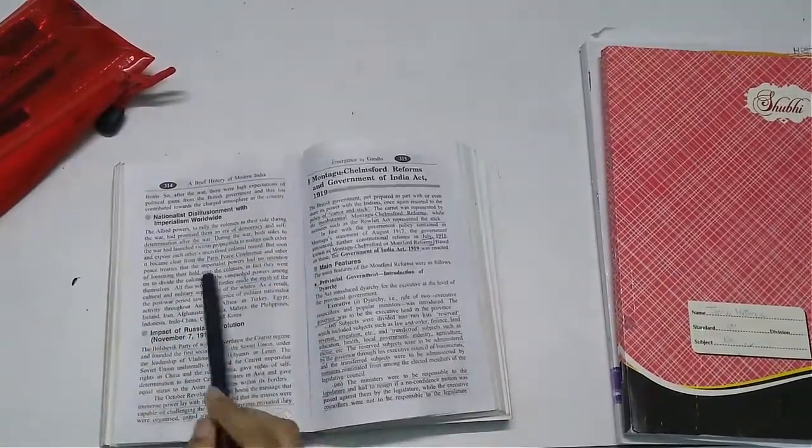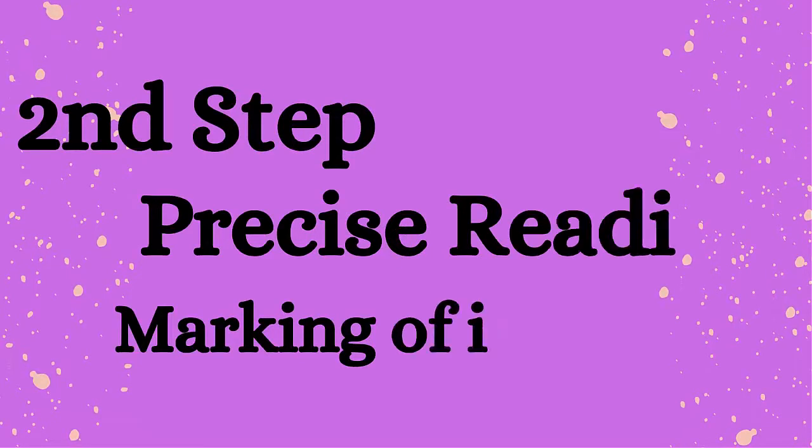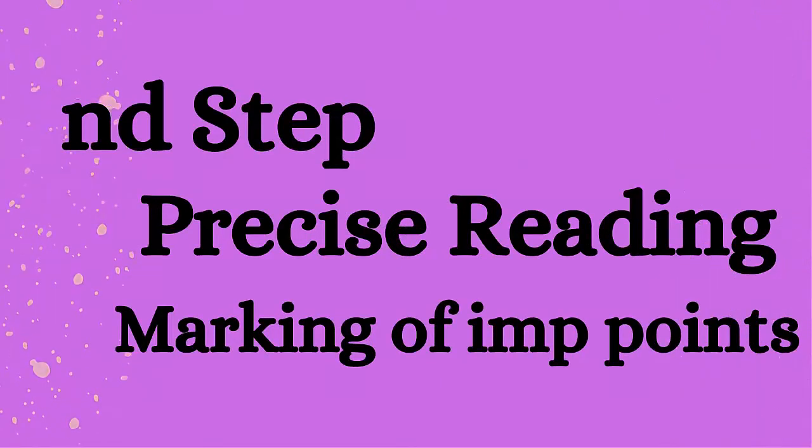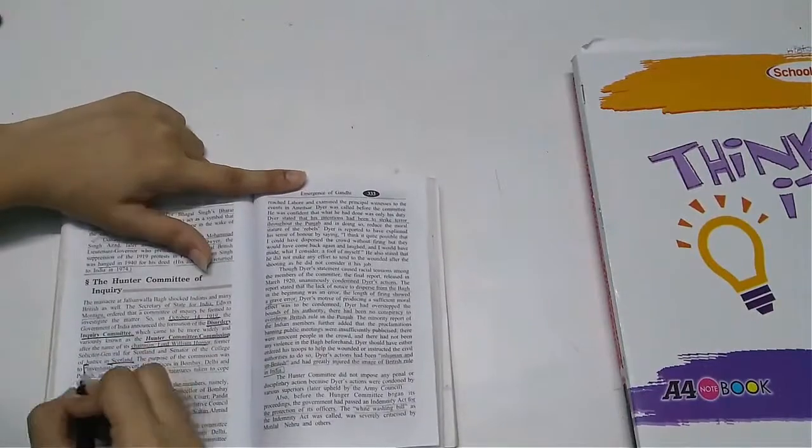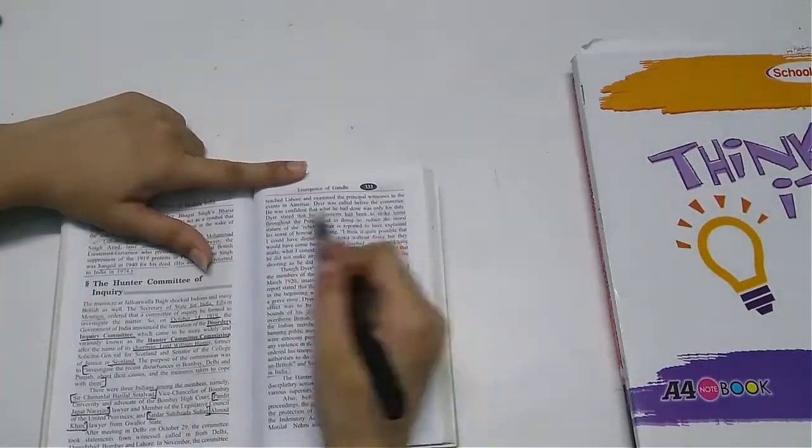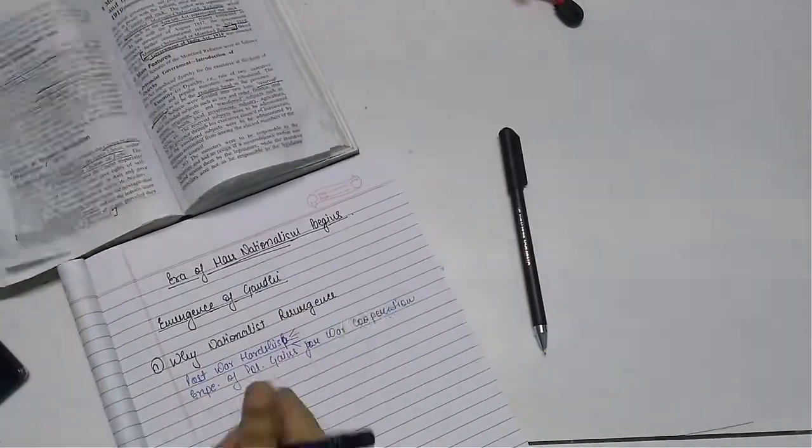My second step includes a more focused and precise reading while marking important points. Then at the end, when I'm done with the second reading, I make brief notes. I note down the main headings of the topic because it gives me an easier way to revise the notes.